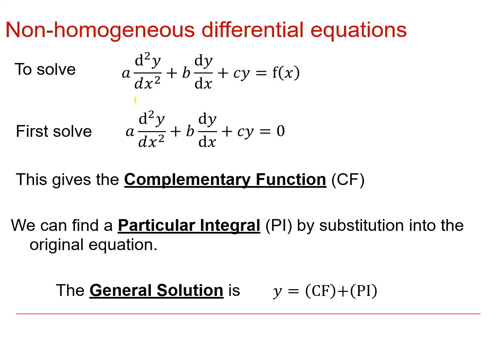We've seen in previous videos how to solve this type of non-homogeneous differential equation by looking first of all at the homogeneous version and finding the complementary function. We can then find the particular integral by substituting something of the same form as this right-hand function f(x). The general solution is then the sum of the complementary function and the particular integral.